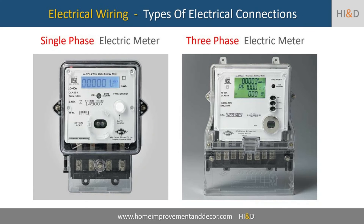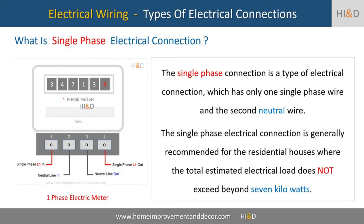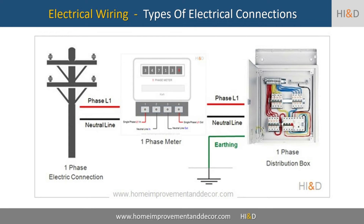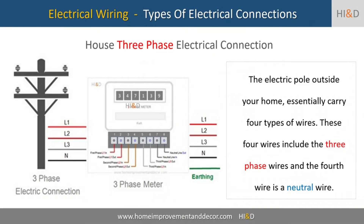The single phase connection is a type of electrical connection which has only one single phase wire and one neutral wire. The single phase electrical connection is generally recommended for residential houses where the total estimated electrical load does not exceed seven kilowatts. Residential houses with two bedrooms, one living room, and kitchen generally come under this category. However, if the electrical load for your house is higher than seven kilowatts, then you should consider getting a three phase connection.